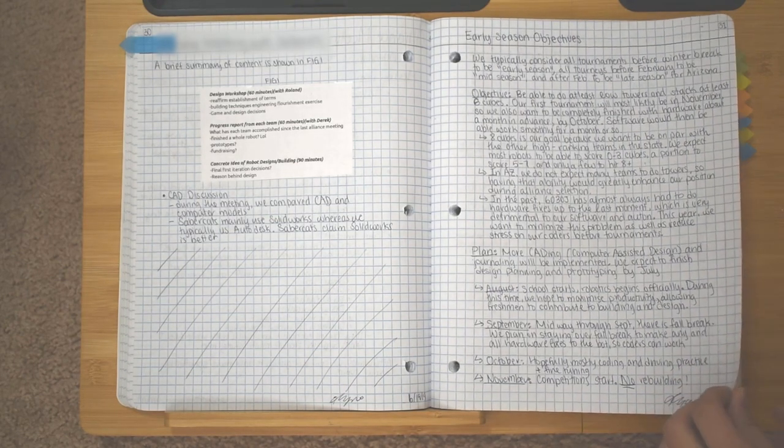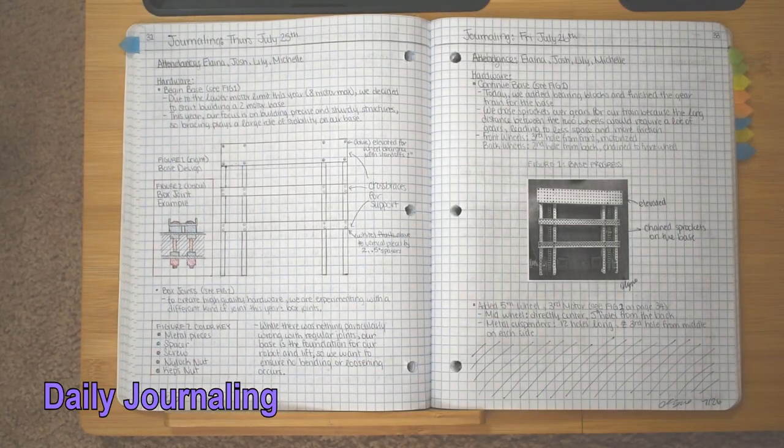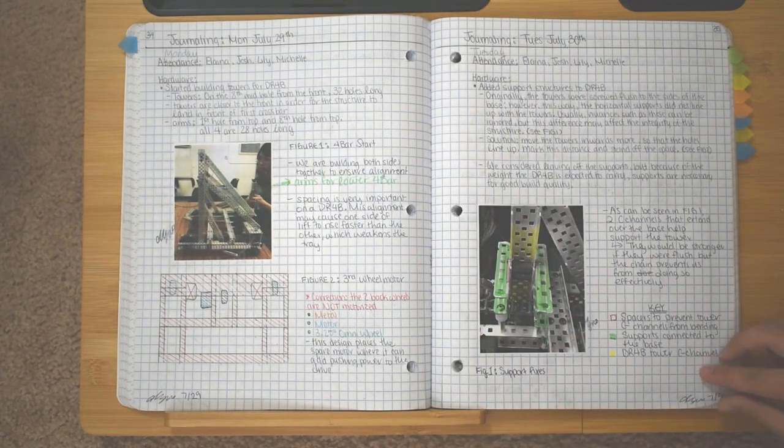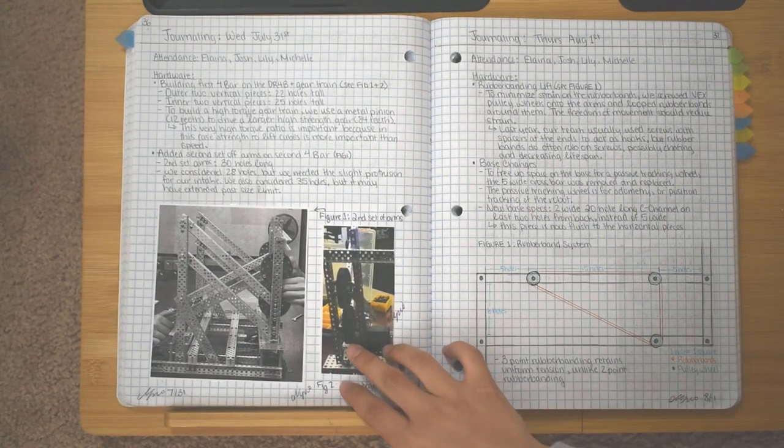Now on to the daily progress entries. At first, our entries were not very good. As you can see, they were only about a half page long to a page long, with sparse writing and minimal diagrams.